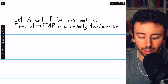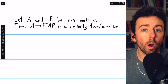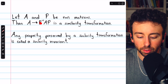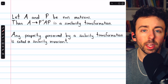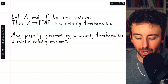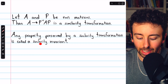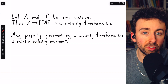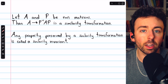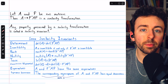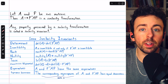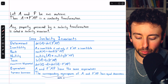These two matrices, A and P inverse AP, are quite similar — there are many important properties that they will have in common. Any property that doesn't change after a similarity transformation is called a similarity invariant. So if you have two similar matrices, a similarity invariant will be a property common to both of them. Here's a list of some similarity invariants, which contains many of the most important properties of matrices we've discussed so far.